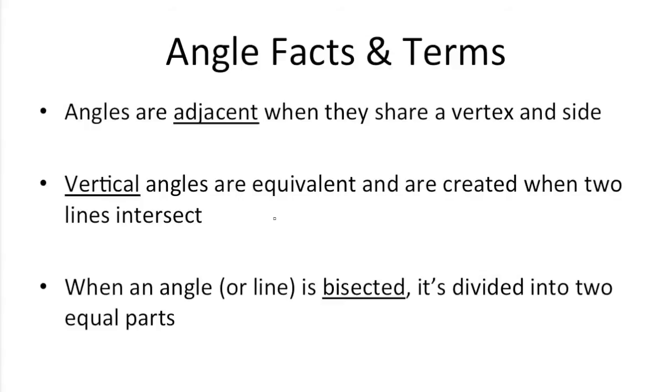Some more angle facts and terms you might need to know. Angles are adjacent when they share a vertex and a side. So in the previous example, we had something that looked like that. These angles are adjacent. They share a vertex, a point here, and a side here.